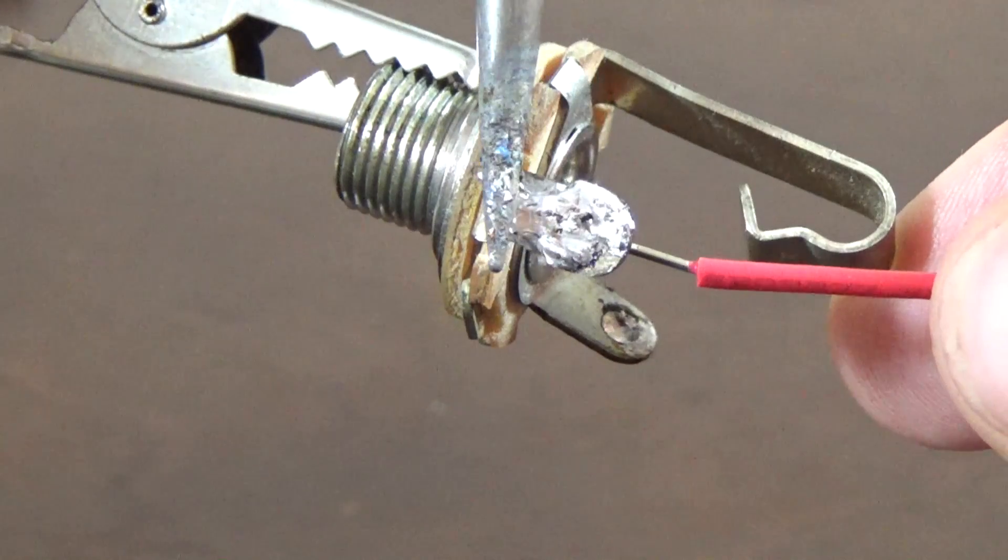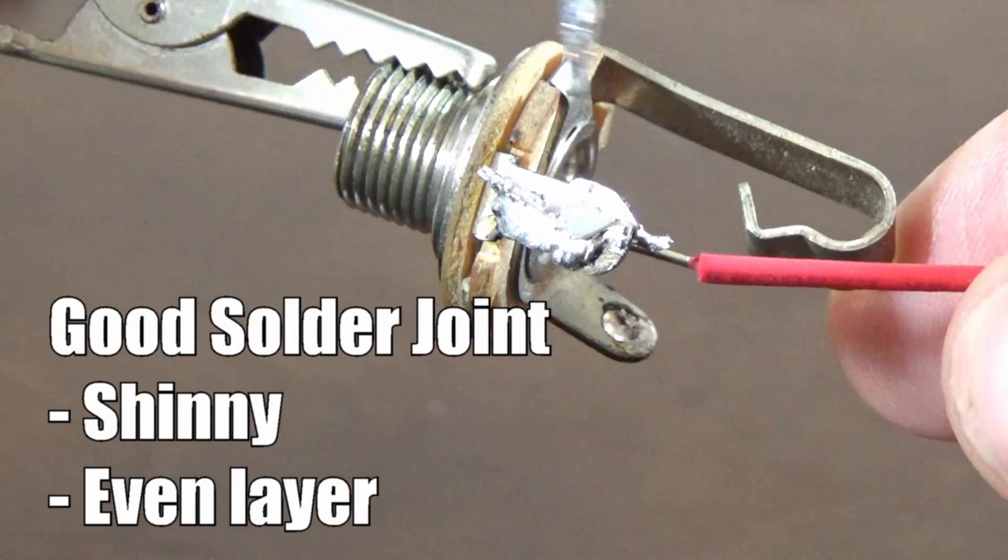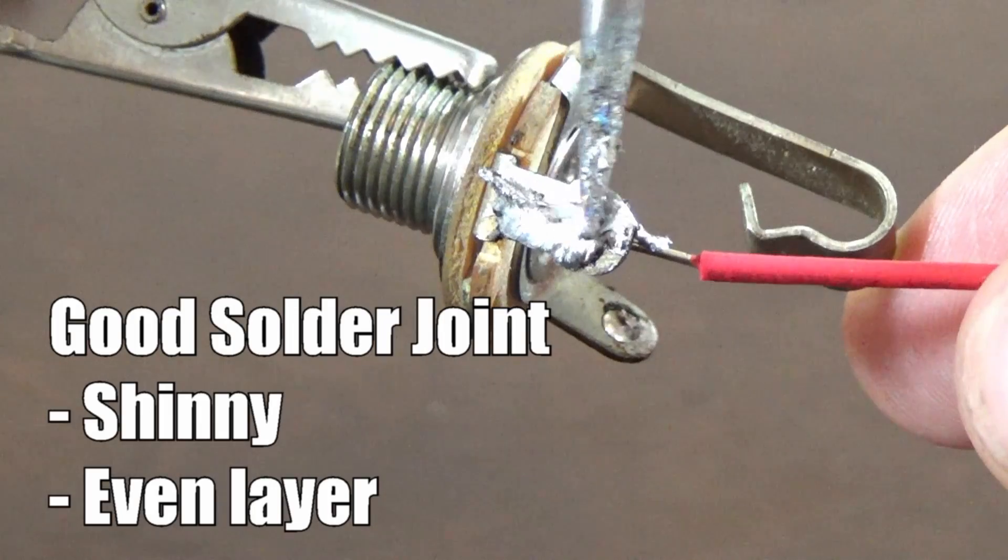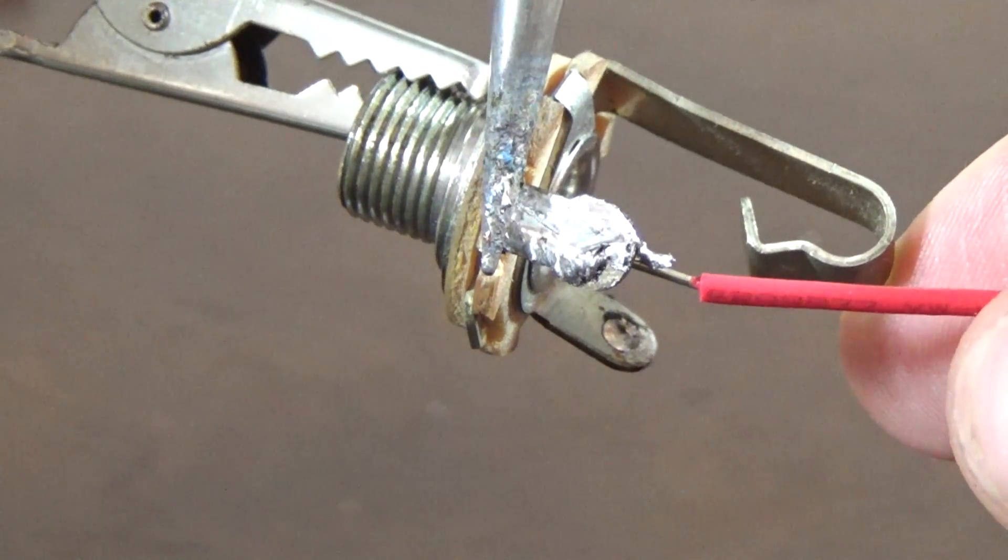An indication of a good solder joint is that it is shiny and has a uniform layer of solder that's evenly sheeted across the connection.